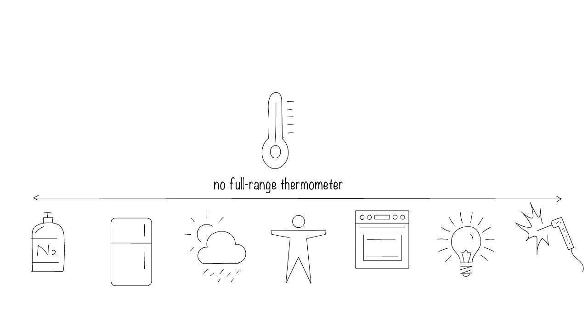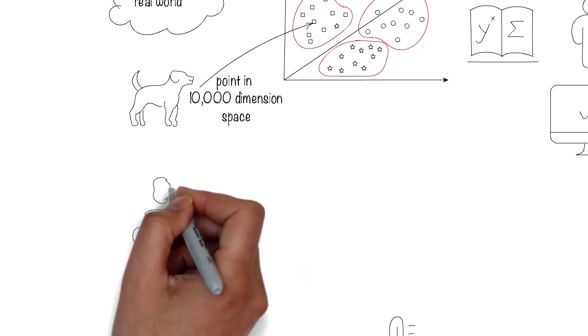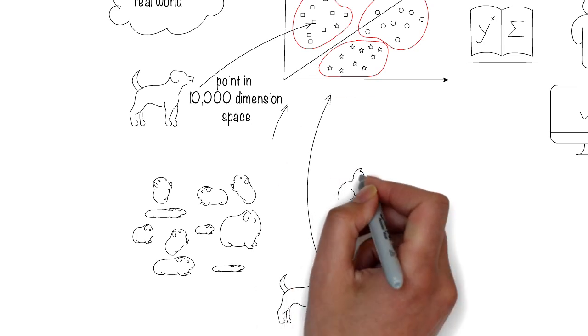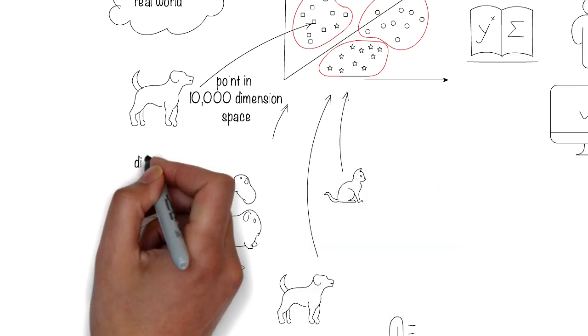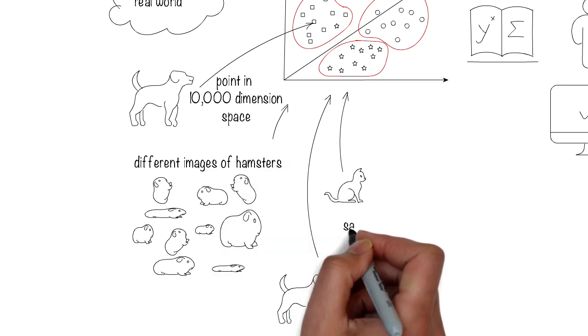Machine learning models work the same way. If you want to build a system to differentiate between dogs, cats, and hamsters, then your training data should represent the variation of images of these pets, which in turn will map to the multidimensional space of interest.